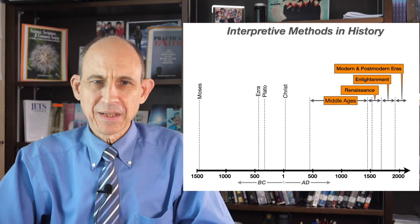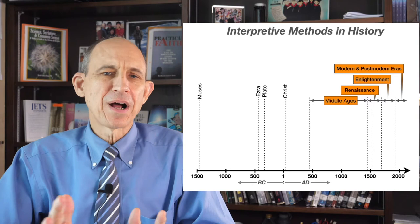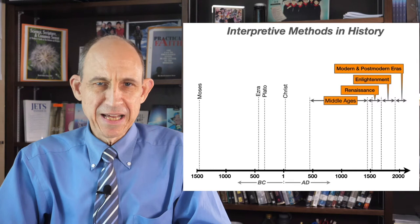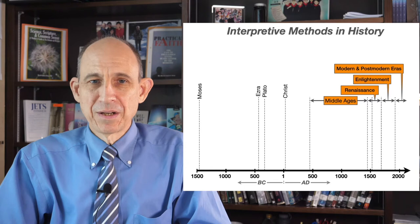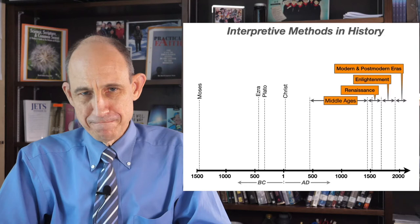The Middle Ages ran from about AD 450 to around 1450. The Renaissance followed, running approximately until the year 1700. From 1700 to perhaps the middle 1800s, we have the period known as the Enlightenment. From the middle 1800s to the present we have the Modern Era, and at the tail end — around 1950 to our present time — we have the postmodern era.